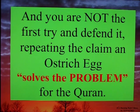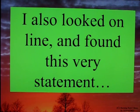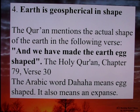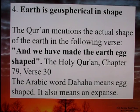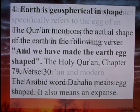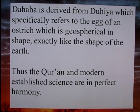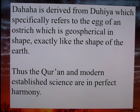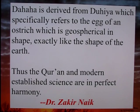Obviously I am not the first to have seen this error in the Quran, and you are not the first to try and defend it, repeating the claim of an ostrich egg solving the problem. I also looked online and found this very statement — Point 4, Earth is geospherical in shape: 'The Quran mentions the actual shape of the earth in the following verse: And we have made the earth egg-shaped. The Holy Quran, chapter 79, verse 30. The Arabic word dahaha means egg-shaped. It also means an expanse. Dahaha is derived from duhiya, which specifically refers to an egg of an ostrich, which is geospherical in shape, exactly like the shape of the earth. Thus, the Quran and modern established science are in perfect harmony.' — Dr. Zakir Naik.